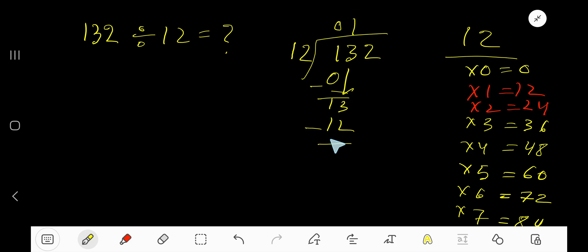12. 12 goes into 12 how many times? 1 times. 1 times 12 is 12. Let me check: 1 times 2 is 2, 1 times 1 is 1.